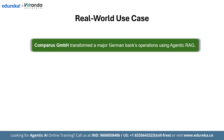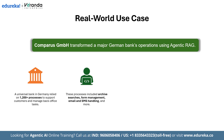Let's start with how Comparers GMBH transformed a major German bank's operations using Agentic RAG. A universal bank in Germany, dependent on over 1200 different processes — from archive searches and form management to sending emails and SMS to support customers and manage its back-office tasks. For example, a single workflow like issuing a power of attorney required more than 30 distinct system calls and manual transfers.